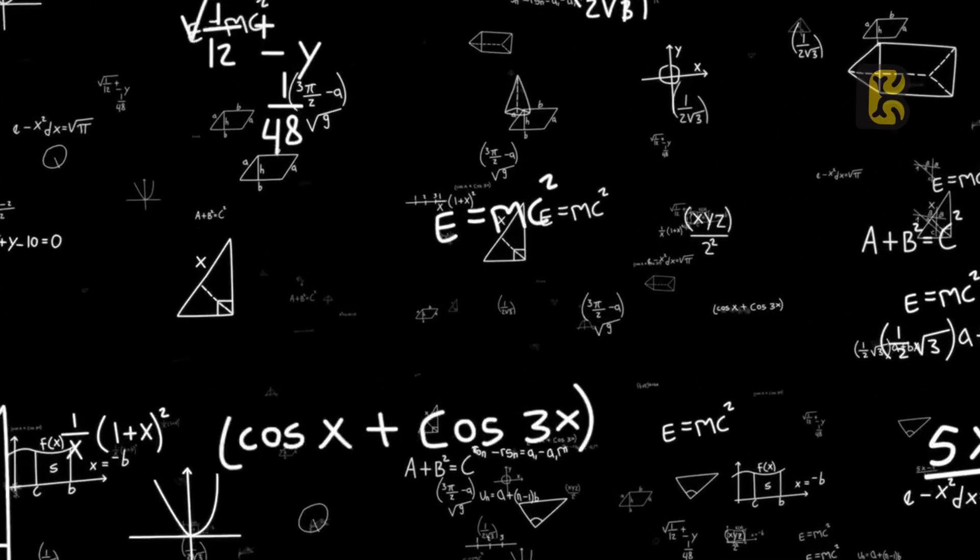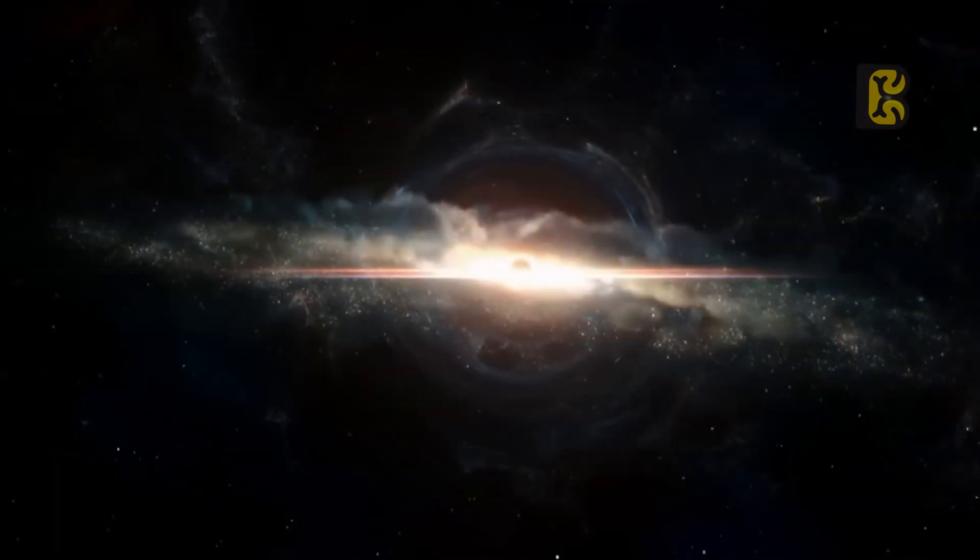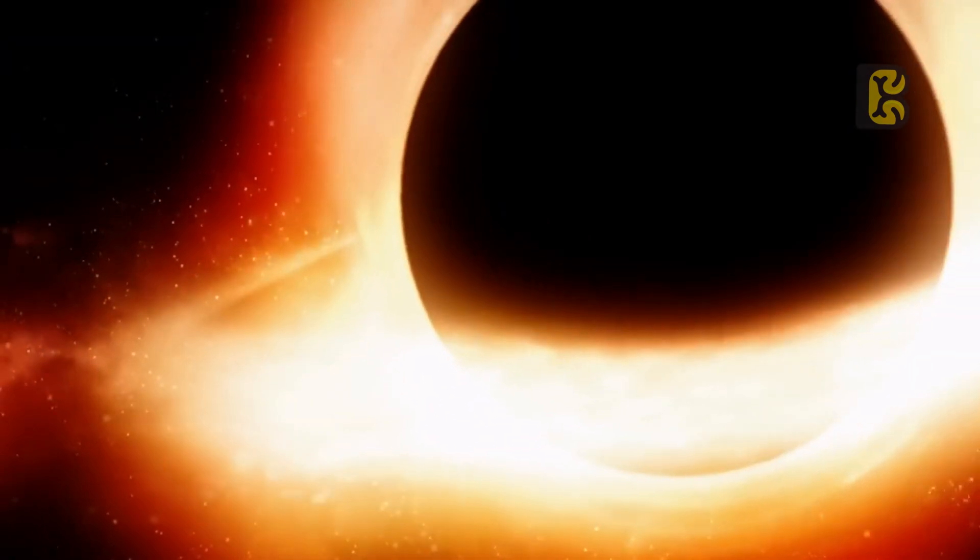In 1915, when Einstein published his theory of relativity, many scientists identified various problems within it. Since then, several scientists have solved these problems and made their own discoveries. Many equations and ideas have emerged suggesting that a black hole is not the end of the universe but rather a pathway to white holes and the multiverse.